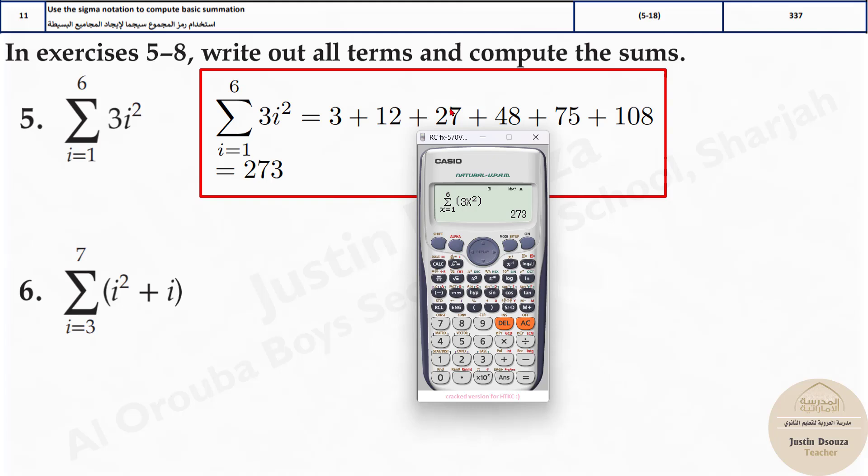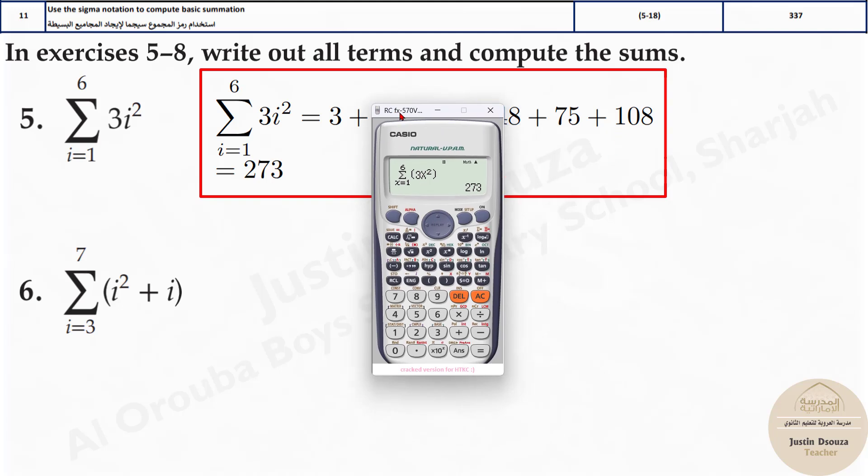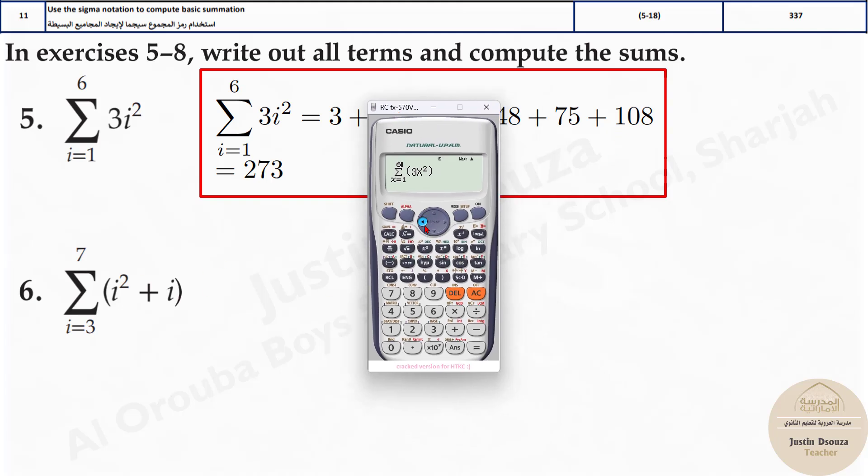You can compute by summing it or by formulas you'll get the same answer. Same thing over here. All you need to do is change these limits. It ends at 7 but it starts at 3. And over here we have i squared, that is alpha x squared plus x. Alpha x. And that is your answer, 160.